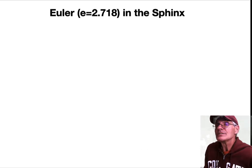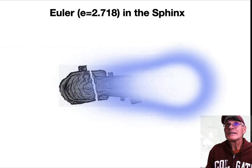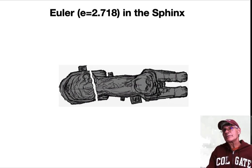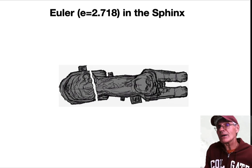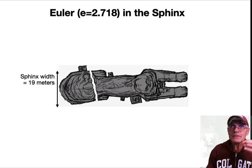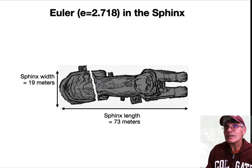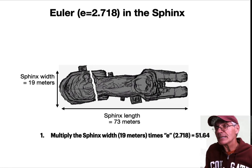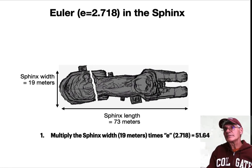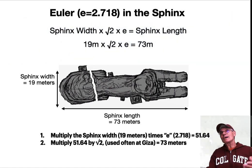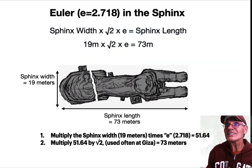Now let's look at Euler. Euler's constant is e = 2.718, and it's in the Sphinx. There's a fissure in the back — I had an artist draw it to scale to show how big it was; it's been repaired by the Egyptian government, but the fissure existed. The Sphinx is 19 meters wide and 73 meters long. Multiply the width (19 meters) by e (2.718) and you get 51.64 — almost the slope angle of the Great Pyramid. Then multiply that by √2, which is commonly used at Giza, and you get 73 meters. So the Sphinx width times e times √2 equals the Sphinx length — Euler is built into the Sphinx.